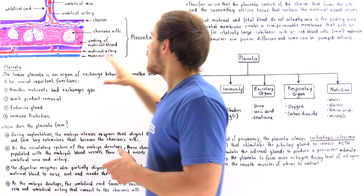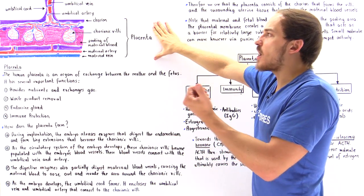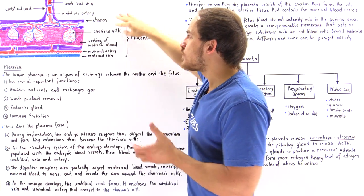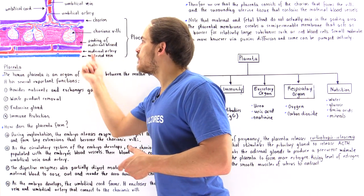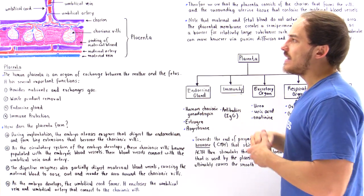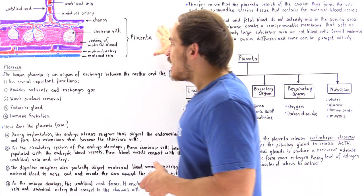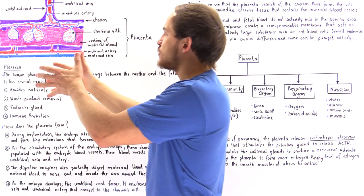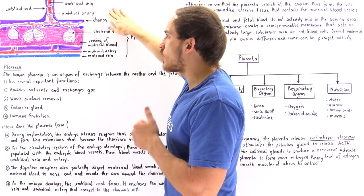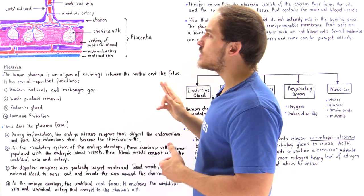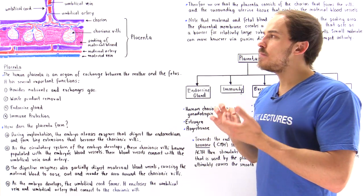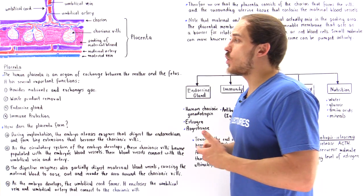This entire diagram basically describes the components of our placenta. We have the chorion that comes from the trophoblast, the chorionic villi which are in contact with the mother's blood, and the maternal blood vessels which have ruptured and created the pooling of that blood within the endometrium in our placenta. We also have the umbilical cord which contains two types of blood vessels — the umbilical vein and the umbilical artery — and it also contains two types of extra-embryonic membranes: the allantois and the umbilical vesicle, also known as the yolk sac. The chorion is the third type of extra-embryonic membrane.